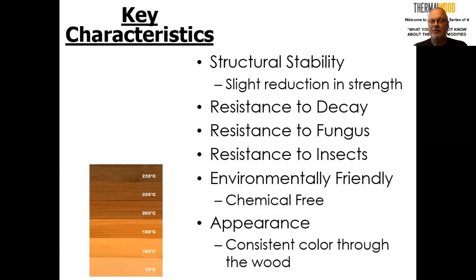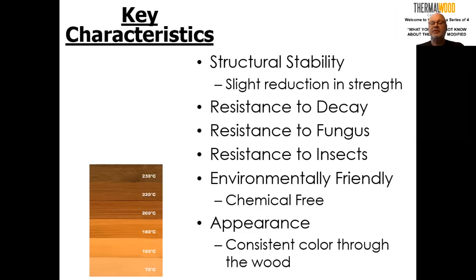Fungus doesn't have any food, so it doesn't grow on thermally modified wood. Insects don't find any food in the wood, so they're not attracted to it. The only difference is with termites — termites will stay away from the wood for a period of time, but eventually they will attack it. To protect against termites, we need to cover the wood with a product called Q-TEC, which was developed in New Zealand specifically for thermally modified wood. It's an oil-based product that soaks into the wood and gives it much higher protection against these critters.